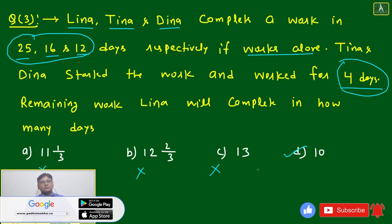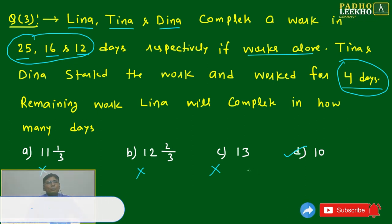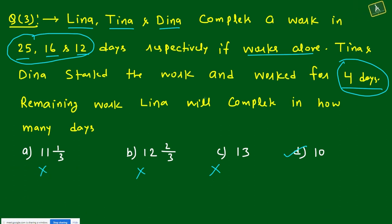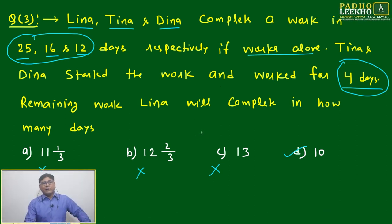How? Tina and Dina started the work and worked 4 days. Then Tina will work 25% of work and Dina will complete 33% work. 25 plus 33, approximately 60% work has completed.